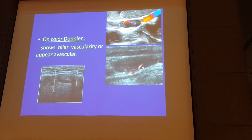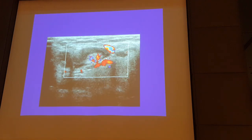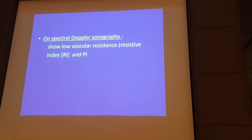On color Doppler study of the normal lymph node, we usually have either no flow at all, or minimal detectable flow in the hilum itself — nothing in the node substance and nothing in the periphery. This is the normal color Doppler for the normal lymph node: avascular or vascularity only through the hilum. On spectral Doppler ultrasound for the normal lymph node, the resistive index is low, and also the pulsatility index. There is no increased resistance inside the normal lymph node.